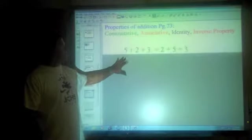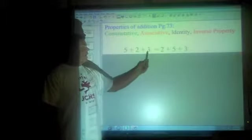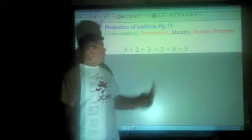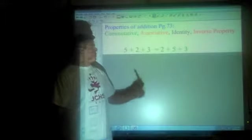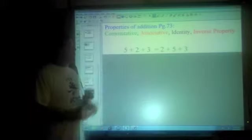The example of commutative property would be the order does not matter. You'll notice 5 plus 2 plus 3, and now it's 2 plus 5 plus 3. The order switched, but the value will not change. 5 plus 2 is 7, 7 plus 3 is 10. 2 plus 5 is 7, and 7 plus 3 is 10. They both equal 10. The order doesn't matter.